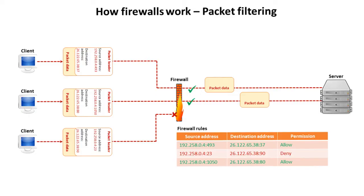A series of rules are set up and applied to traffic, and if any traffic fails the rules it is blocked. This prevents both unauthorised traffic in and out of a network. These rules can be set up in a variety of ways — they can be set to block specific web pages, addresses or domains, or to block messages that contain certain words or streams of data.